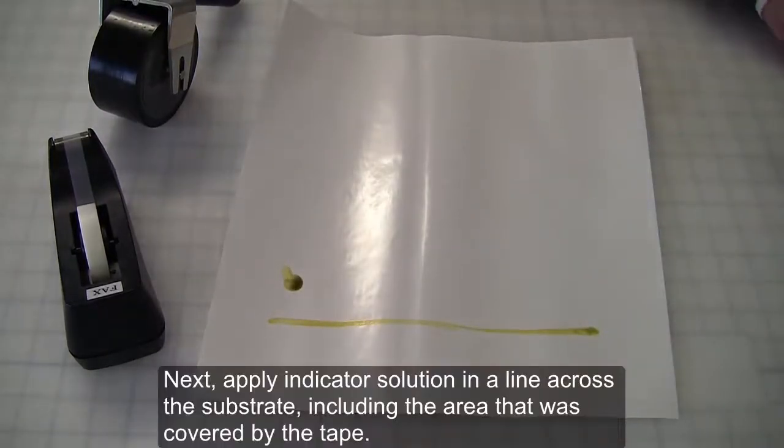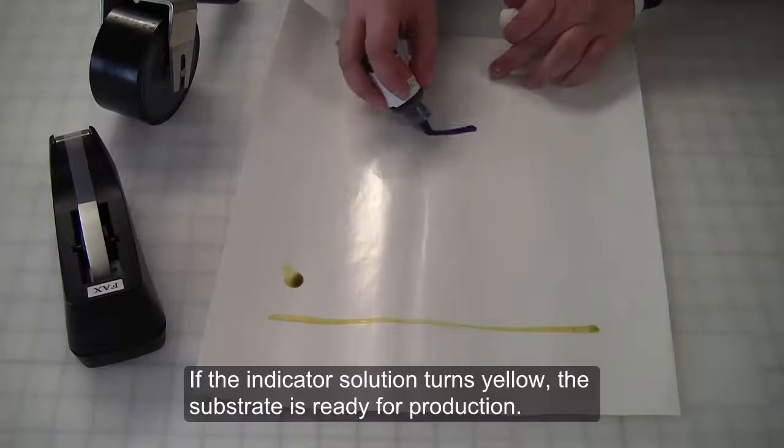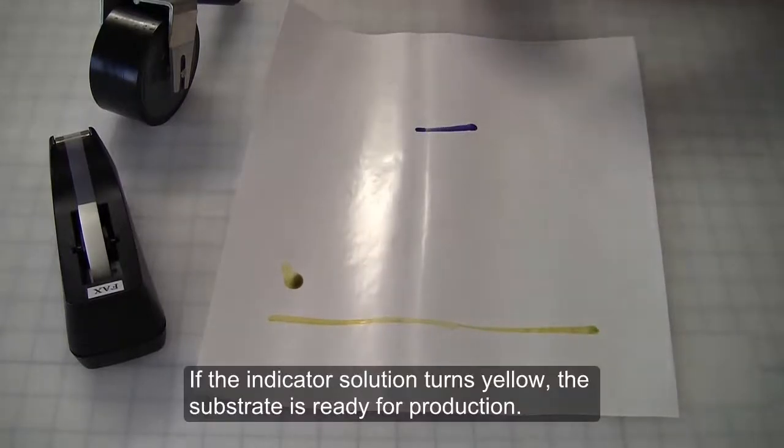Next, apply indicator solution in a line across the substrate, including the area that was covered by the tape. If the indicator solution turns yellow, the substrate is ready for production.